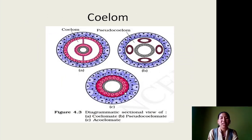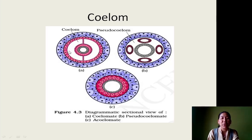Next is coelom. Coelom is nothing but a cavity between the ectoderm and endoderm. This is seen during the embryonic stage. During embryonic development, the embryo is made up of a number of cells which differentiate into outer ectoderm, inner endoderm, and middle mesoderm. If there is a space within the mesoderm — between the outer ectoderm and inner endoderm — that space is called coelom. If the space is absent, we call the organisms acoelomate. In acoelomates, you find outer ectoderm, middle mesoderm, and inner endoderm, but no space between them.